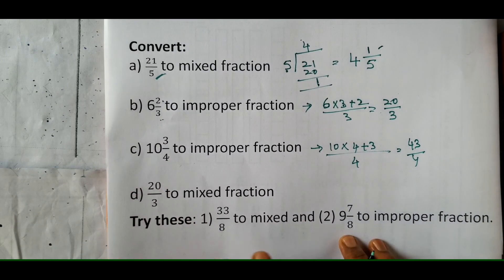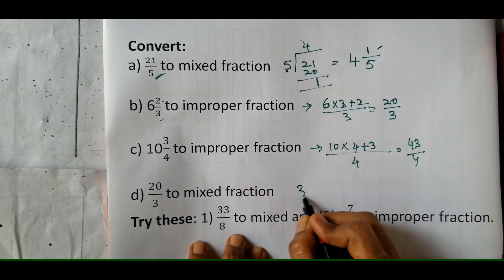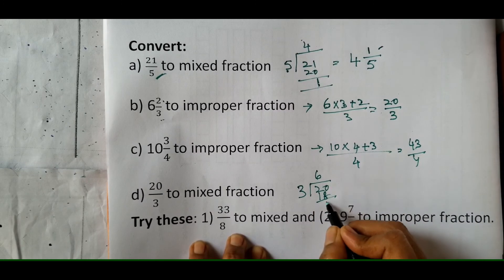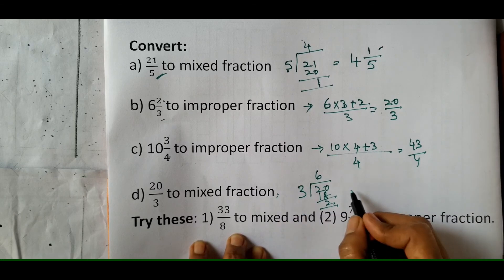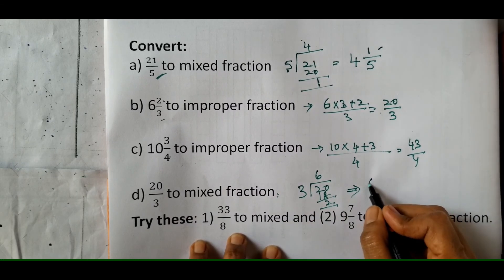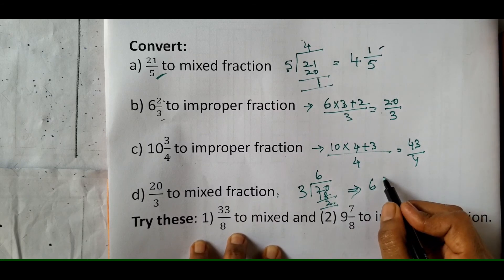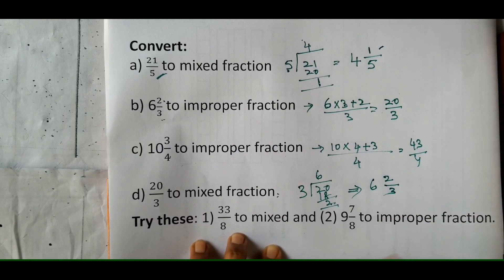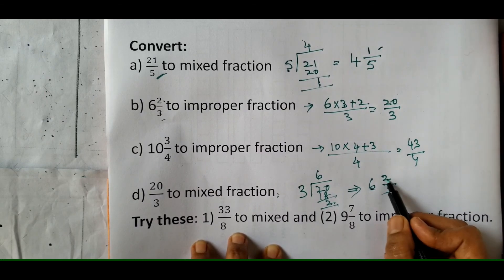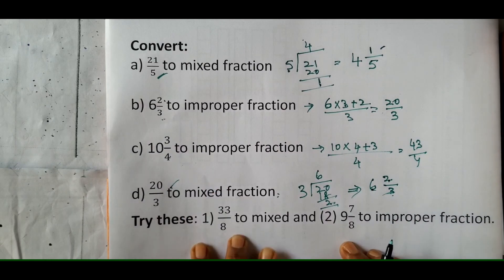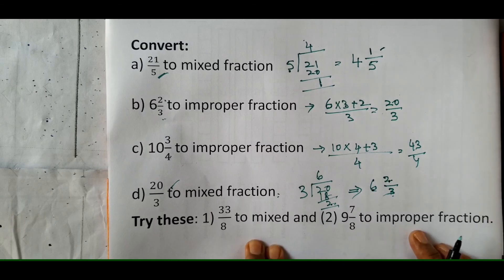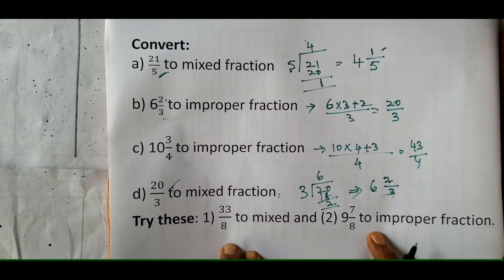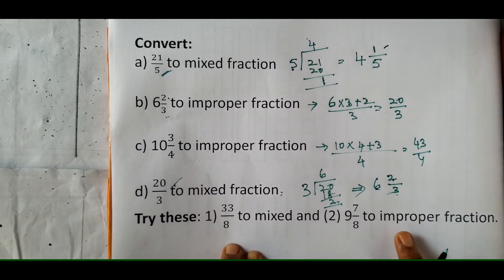The final question: we divide — 6 threes are 18, remainder 2. The quotient is the whole number, the remainder is the numerator of the proper fraction, and the divisor is the denominator. So the answer is 6 and 2 upon 3, which equals 20 upon 3. You can confirm: 6 threes are 18, plus 2 equals 20, giving 20 upon 3. I have given you two questions — one to convert to mixed fraction and one to convert to improper fraction. Try it.